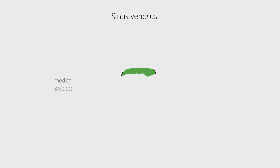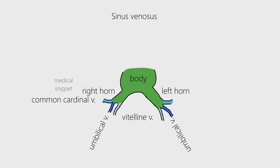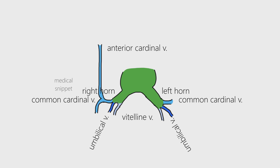We are now interested in the sinus venosus part of the heart tube. It is divided into a body and two horns, namely right and left horns. Each horn receives three sets of veins: the vitelline vein, umbilical vein, and common cardinal vein. The common cardinal vein divides into anterior cardinal vein and posterior cardinal vein.